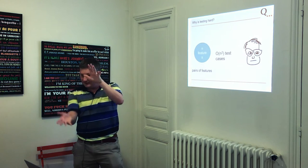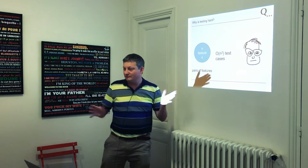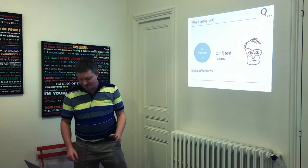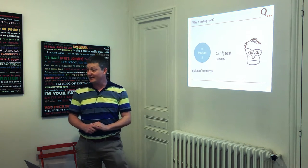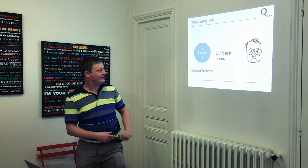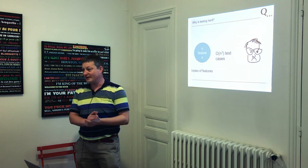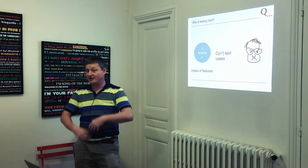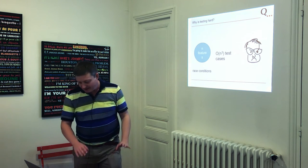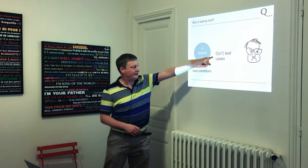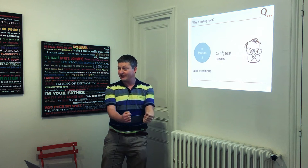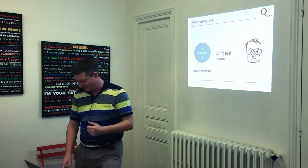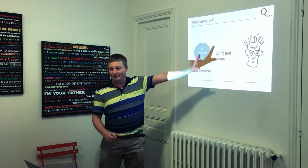If you have 20 features, as Christopher showed, you have to write 400 test cases — not so nice. But what about triples of features? Now it gets really annoying, because 20 to the power of 3 is huge. Running all those tests takes an enormous amount of time, and then you have race conditions which make it even harder because you have to run all those tests many times to provoke a race condition.